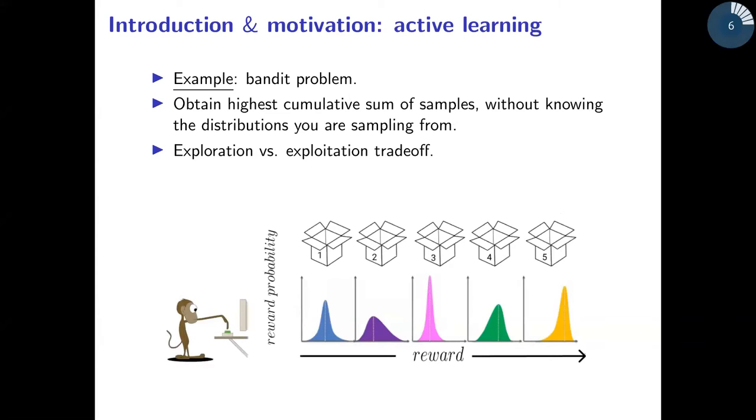As an example, there is a canonical example from machine learning, which is called a bandit problem, where the monkey is faced towards boxes, say five boxes like here, and each box when sampled delivers a reward. The monkey has to sample only a single box per time.